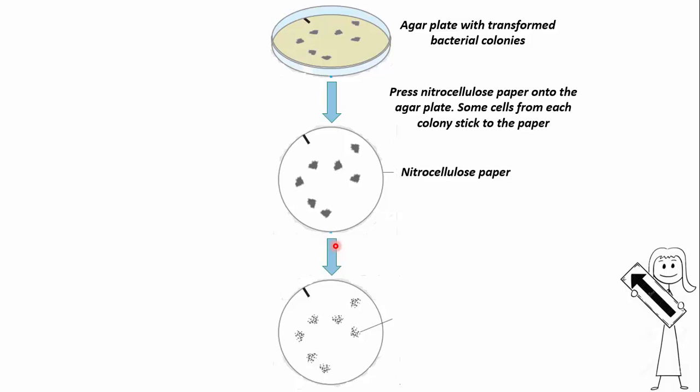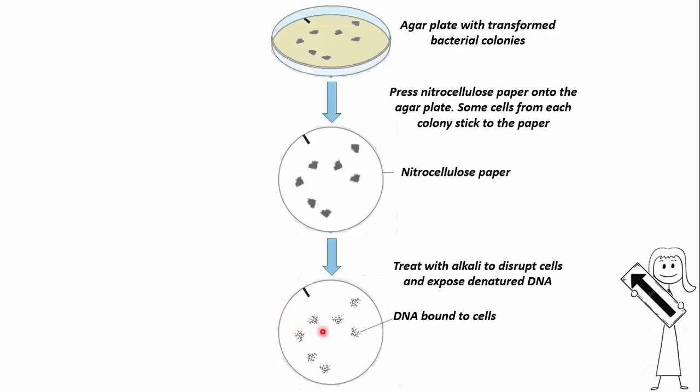Then we will treat our nitrocellulose filter membrane with SDS detergent and alkali. SDS will lyse the bacterial cells while alkali separates the DNA into single strands. To fix the DNA onto the nitrocellulose filter paper, either we will bake the paper at 80 degrees Celsius or expose it to UV light.